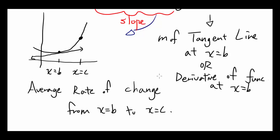That's how we define average rate of change is the slope of secant line, the slope of a line that goes through two points. So the average rate of change from x equals b to x equals c is going to be the slope of this line.